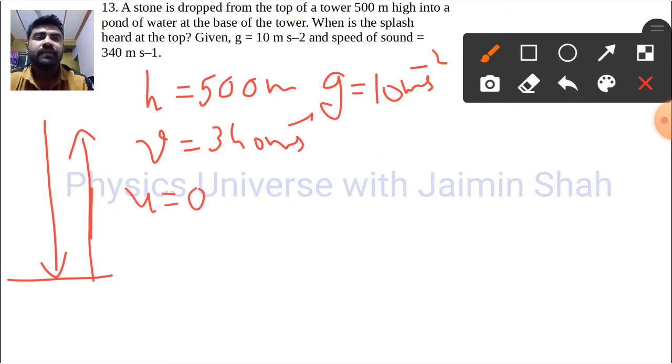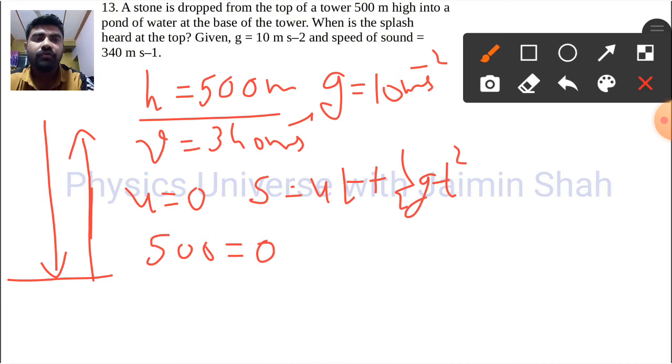We have 500 meters so we can find time with the help of the second equation of motion: s = ut + ½gt². So 500 = 0 + ½(10)t². We take 10 as positive since we're dropping, and t is unknown.